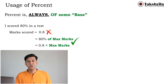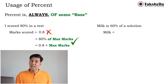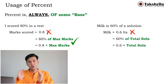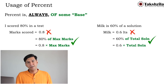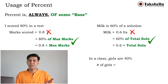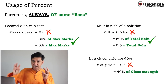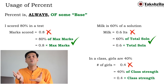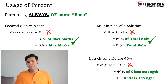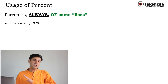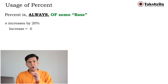More examples: if milk is 60% of a solution, it means 0.6 times the total solution, not 0.6 liters absolutely. If girls are 40% of a class, it means 0.4 times the total class size — girls can't be fractional. The moment you see a percentage, attach an anchor: it is 0.4 times the class total. Without a base, the percentage hangs meaninglessly.